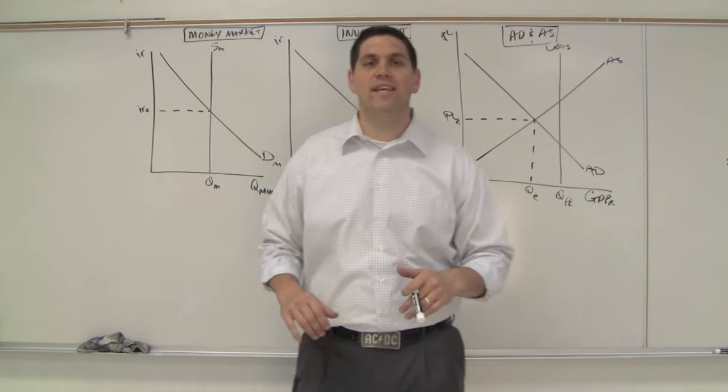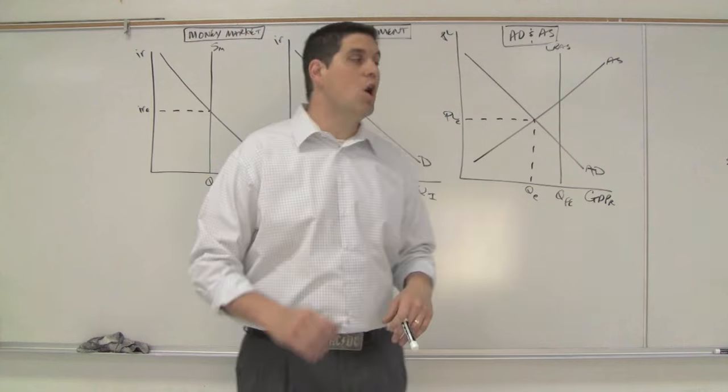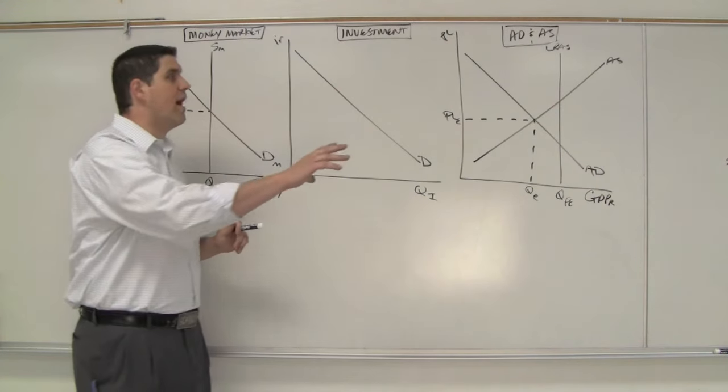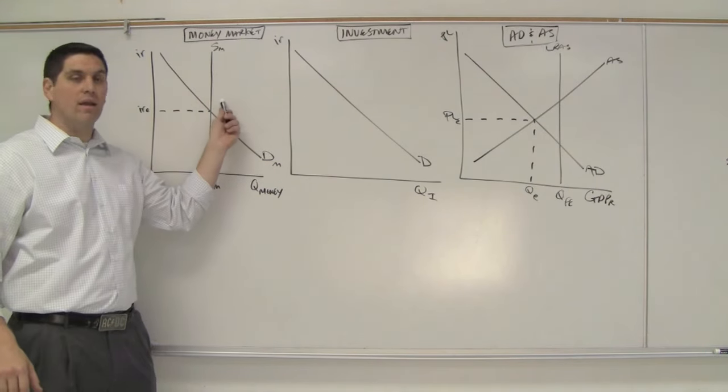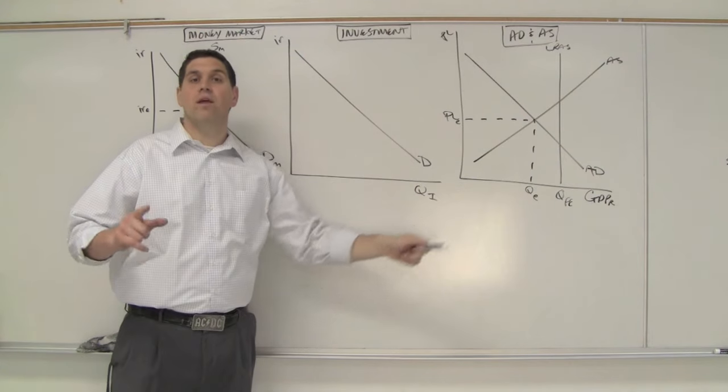Hey, how are you doing? This is Mr. Clifford. This is ACDC Econ. We're talking about monetary policy. What I have for you is three different graphs, and we're going to connect the supply and demand for money to the aggregate demand that you learned in the last unit.